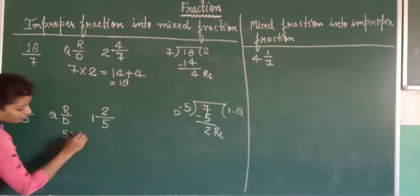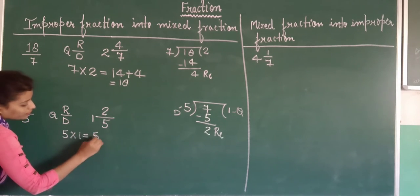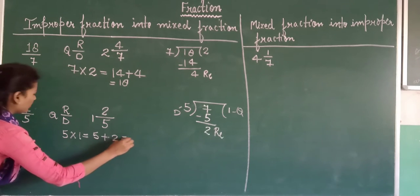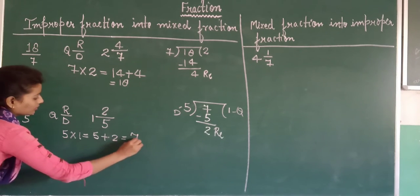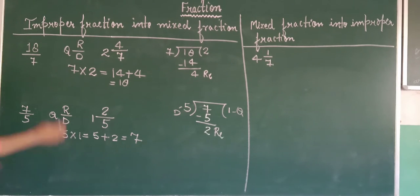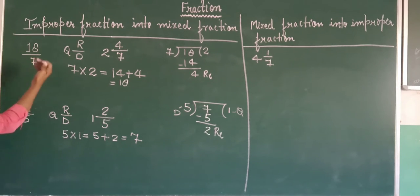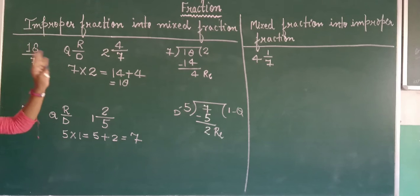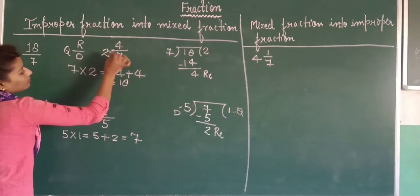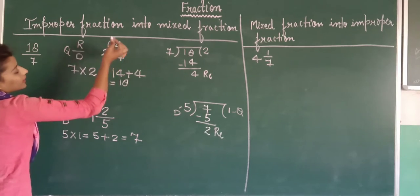Check karte hain: 5 times 1 = 5, 5 mein 2 add kiya to aya 7 — yahi toh humara answer hai. Yeh ho gaya proper way improper fraction ko mixed fraction mein convert karne ka. Sirf isse multiply karna hai aur isme add kar dena hai.